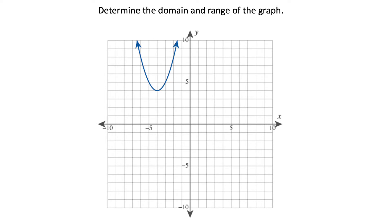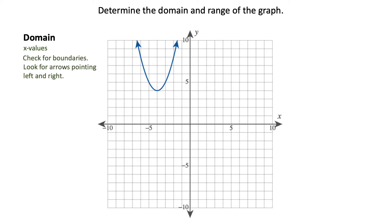We're going to start with this parabola and we're going to start with domain. When you are considering the domain, think about your x values and look for boundaries and arrows that are pointing left and right, because for domain you're thinking about the left behavior of the graph and the right behavior. Looking at the arrows on this graph, they are pointing in both directions — there's a left-facing one and a right-facing one. That left arrow is said to approach negative infinity; it's not a boundary but it is where it's approaching, and that's part of the domain.